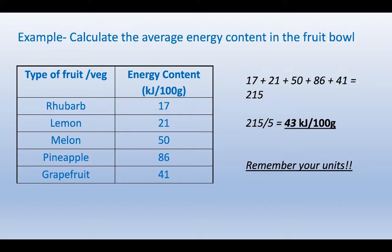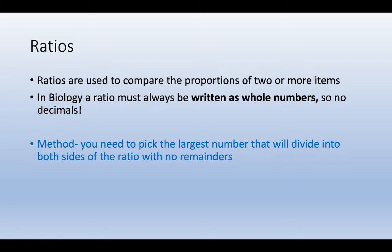Another example: calculate the average energy content in the fruit bowl. Type of fruit or veg and the energy content in kilojoules per 100 grams. I've taken 17, 21, 50, 86 and 41 and added them up to get 215. This time I have five numbers in my data set, so I've divided 215 by five, which gives me 43. Again, remember your units. It's 43 kilojoules per 100 grams.